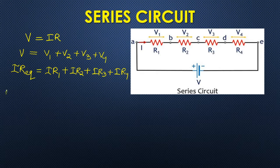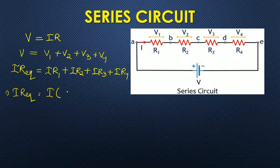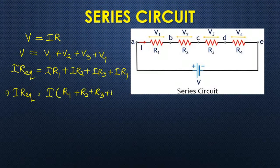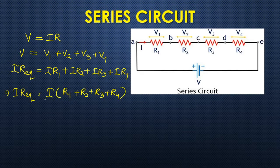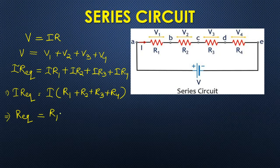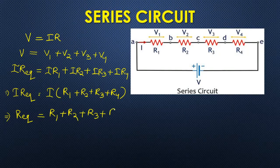Simplifying this, if we take I as common, we get I into (R1 plus R2 plus R3 plus R4). Canceling out the current on both sides, we find that the equivalent resistance in a series circuit is the sum of all the individual resistances in the chain connection.